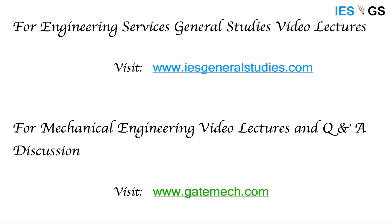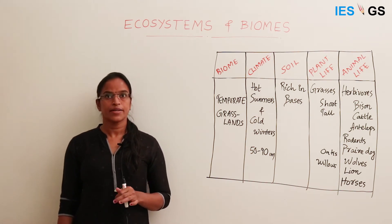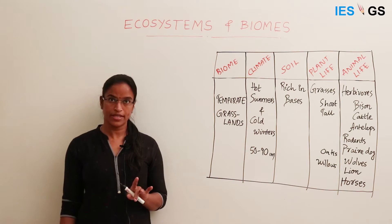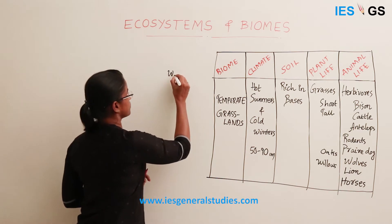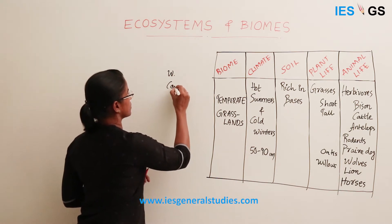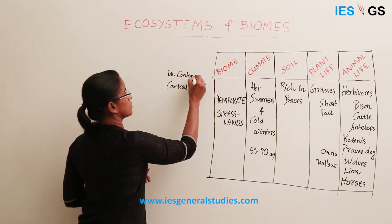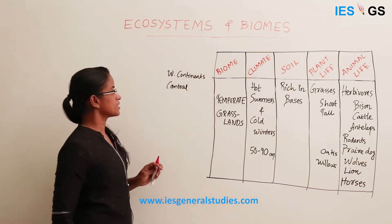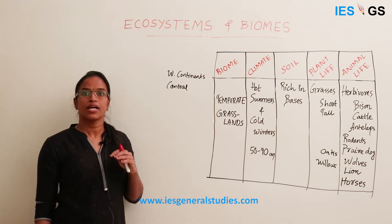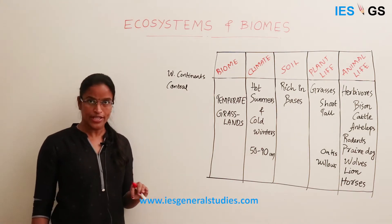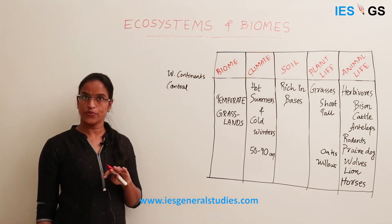Let us see about the temperate grassland ecosystem. Temperate grasslands are found in the temperate regions, mainly in the western margins or the central part of the continents. In these regions the climate will be of extreme type — summer will be very hot and winter will be very cold. It is a continental climate, and in such regions grasslands form the major ecosystem.